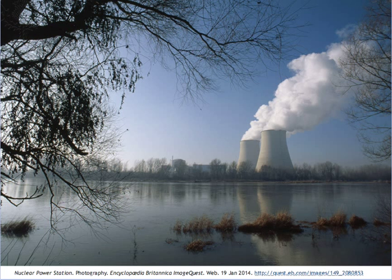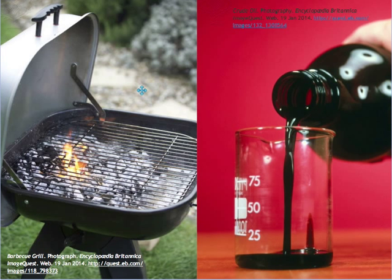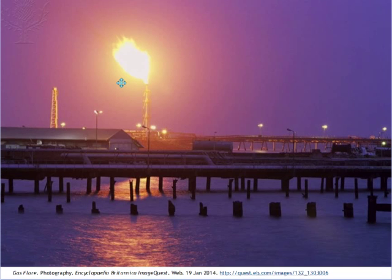Through controlled nuclear reactions, energy can be released in massive amounts to convert water into steam. The steam, when channeled under high pressure, is sufficiently powerful to rotate giant turbines and generate electricity.